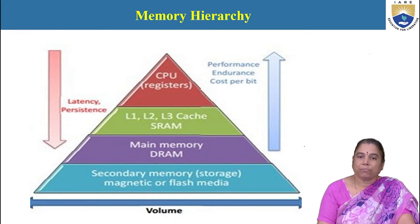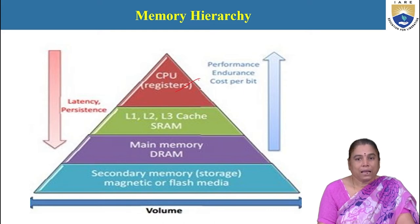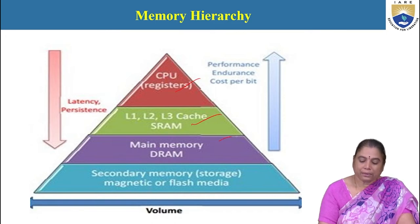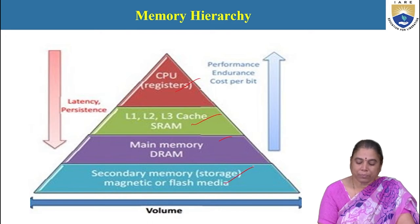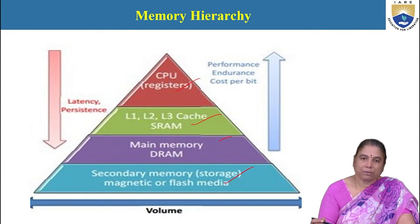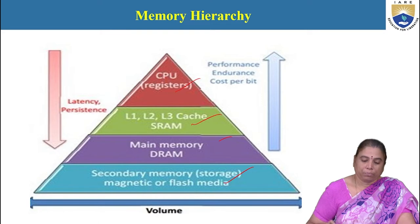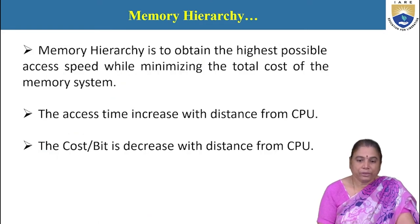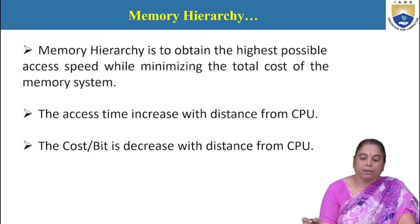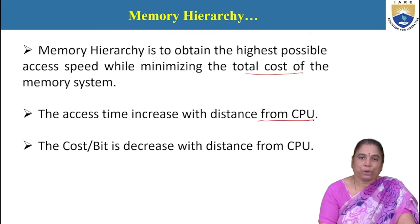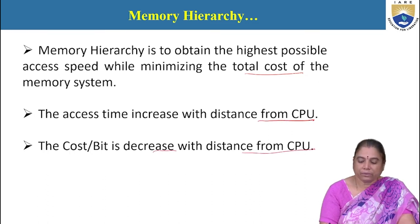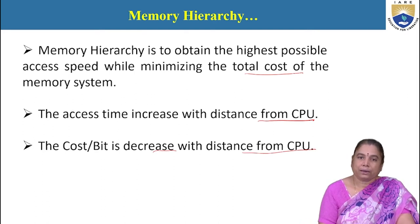CPU registers are very small in size but high speed. L1, L2, and L3 are the cache memory levels — slower than CPU registers but faster than main memory (DRAM). Below main memory, secondary memory devices are placed; they are of large volume. The goal of the memory hierarchy is to obtain the highest possible access speed while minimizing the total cost of the memory system. Access time increases with distance from CPU, and cost per bit decreases with distance from CPU.